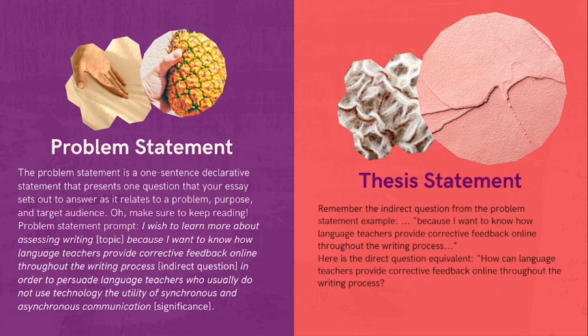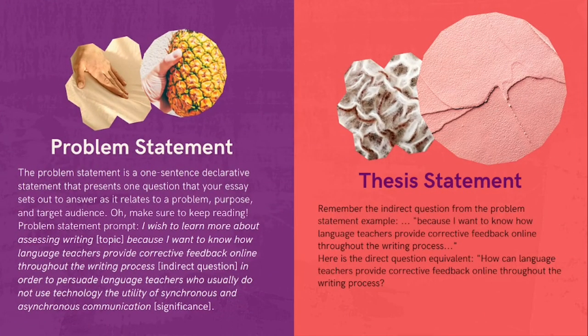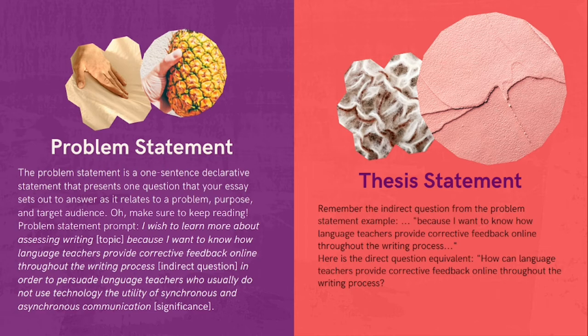We'll look at a simplified version of a thesis statement focusing on the topic or subject and the opinion, claim, position, or point of view — the verb phrase. We just want to see how the thesis statement relates to the indirect question embedded inside the problem statement. So we have our indirect question: 'I want to know how language teachers provide corrective feedback online throughout the writing process.' I'm going to convert this first to the direct question equivalent: 'How can language teachers provide corrective feedback online throughout the writing process?' Notice that if you compare the direct question to the indirect question, essentially we're using the same words — just converting it by changing the word order and adding the modal 'can.'